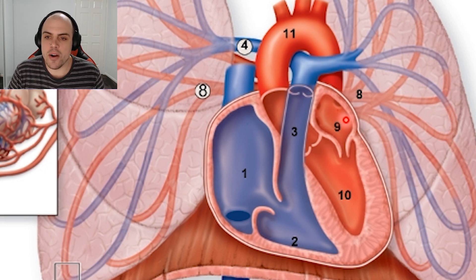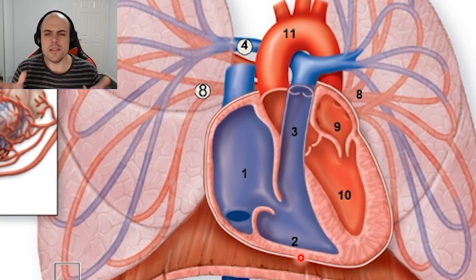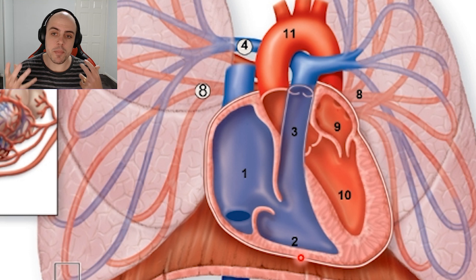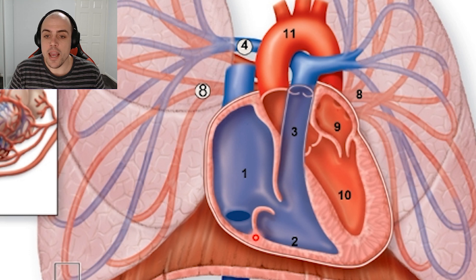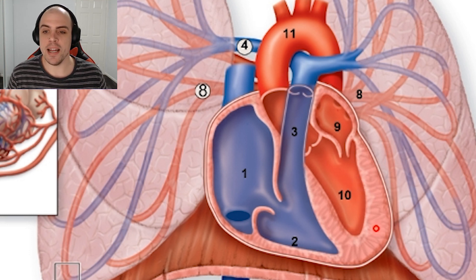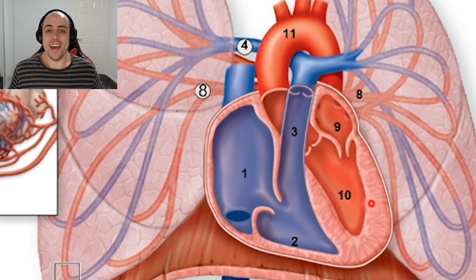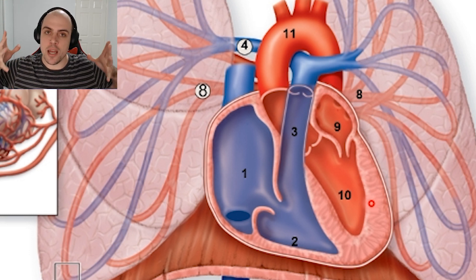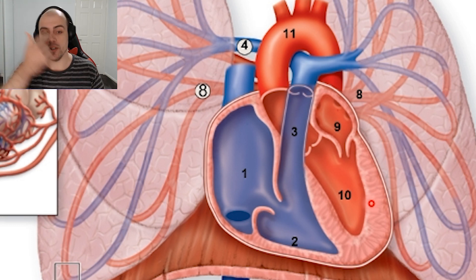We can also see in this diagram the sheer size difference of our left ventricle compared to the right ventricle. Why would one side of the heart have so much more muscle? The answer lies in how far we need to deliver the blood. The right side only delivers blood to the lungs, which is relatively close. The left side, however, has to deliver blood to the rest of the body — a much further path — so it needs to constrict and push that blood a lot harder.